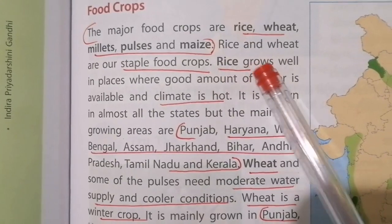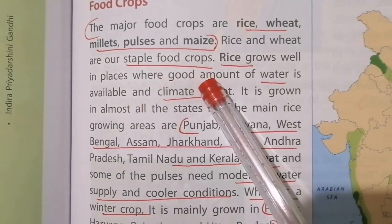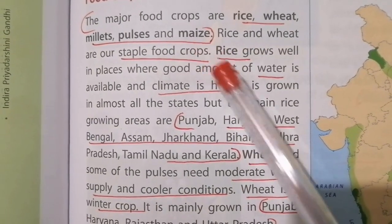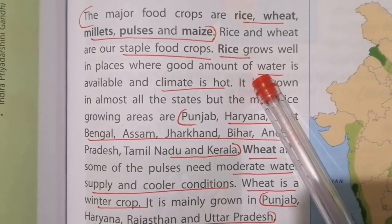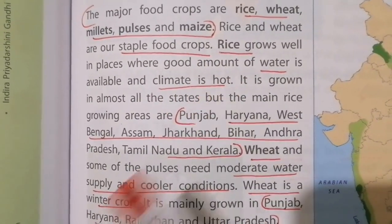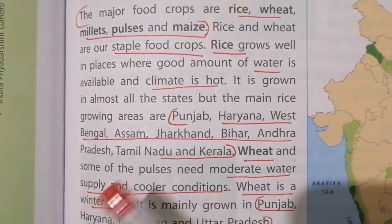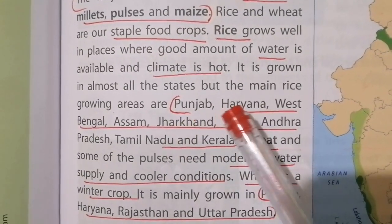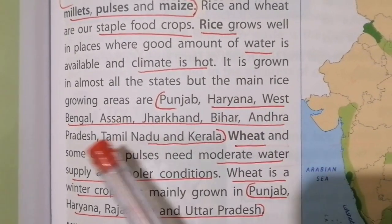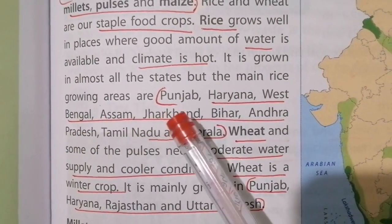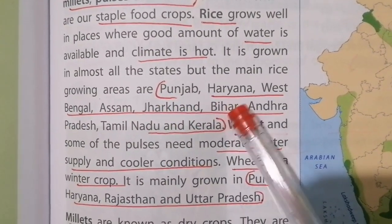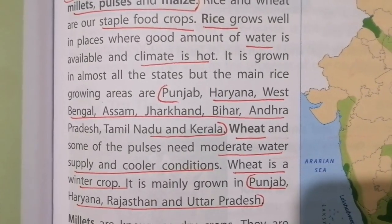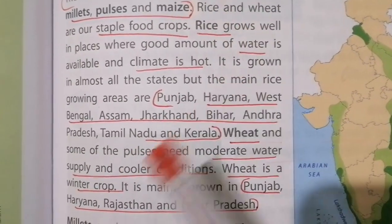Rice grows well in places where a good amount of water is available. For growing rice you need a good amount of water and the climate should be hot. The main states where rice is grown are Punjab, Haryana, West Bengal, Assam, Jharkhand, Bihar, Andhra Pradesh, Tamil Nadu, and Kerala.